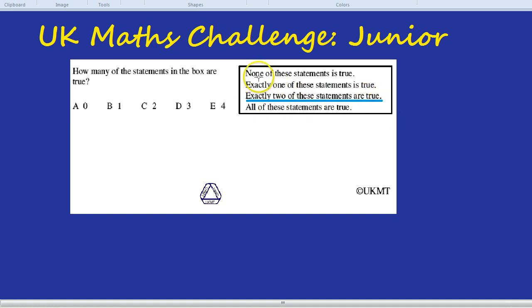But we've already seen that none of them is true can't be right. We've seen that exactly one of these statements is true. Well, that wouldn't fit in with this. Because how can it be that one of them is true and yet exactly two of them are true? It's contradictory. And if all of these are true, that would be more than two. So exactly two of these statements are true can't work. It's got no partner. If it was true, it would need a partner to go with that was also true. But it doesn't have a partner.